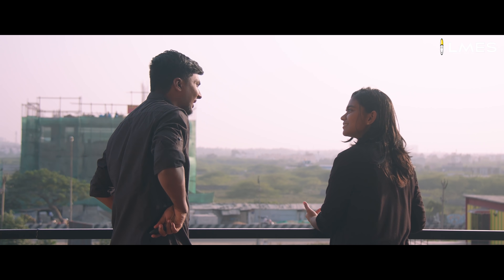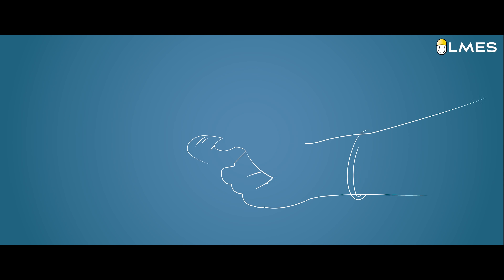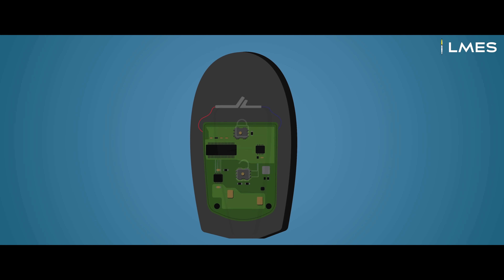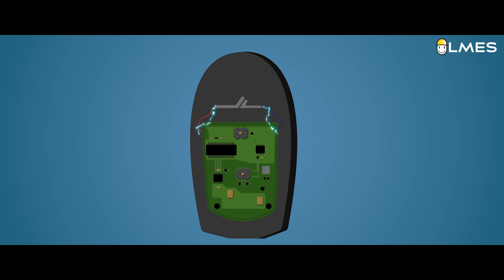You can see the car key. You can see the key in this car. There are two units: one circuit unit and one transmitting unit. This circuit unit is 10 Hz. This is the alternating current. This is the transmitting unit.